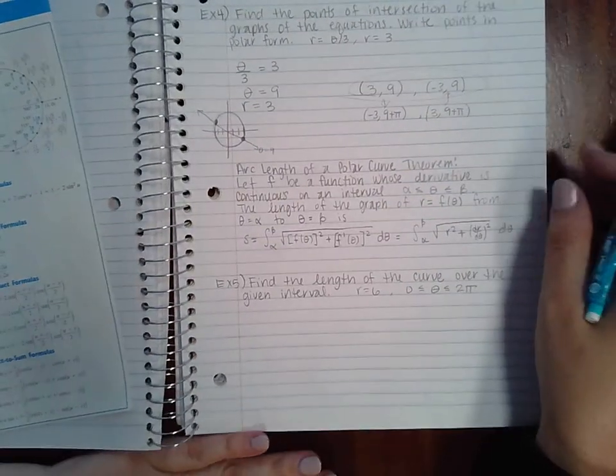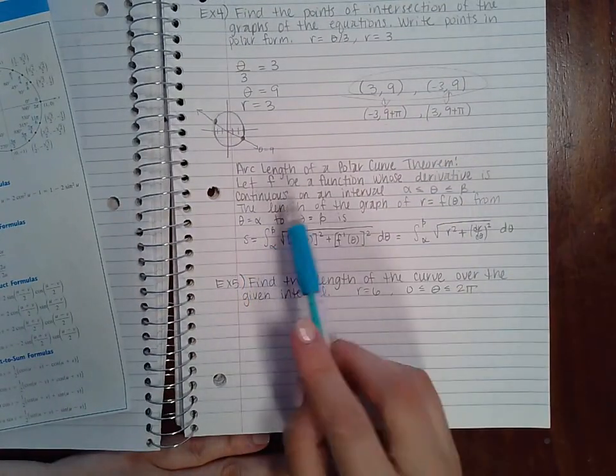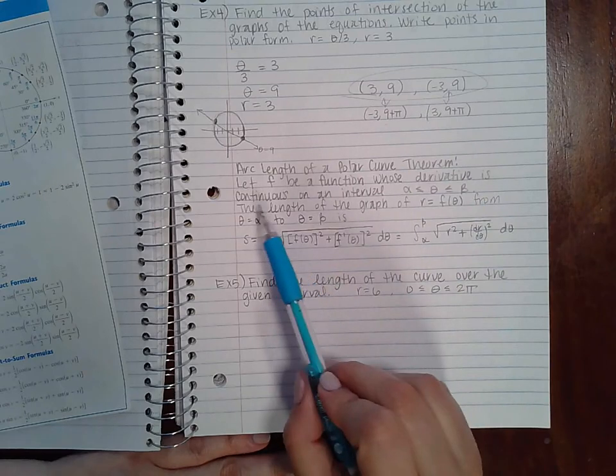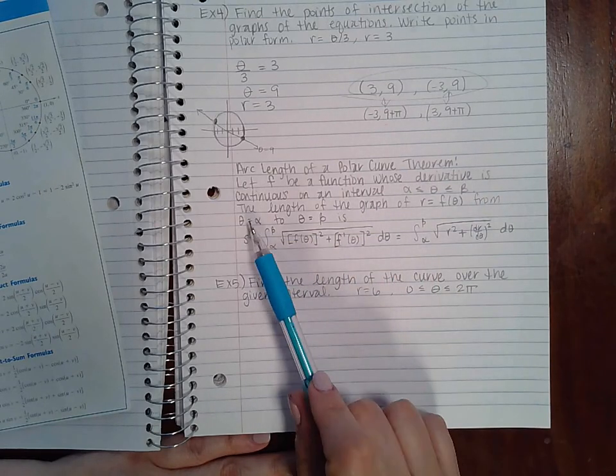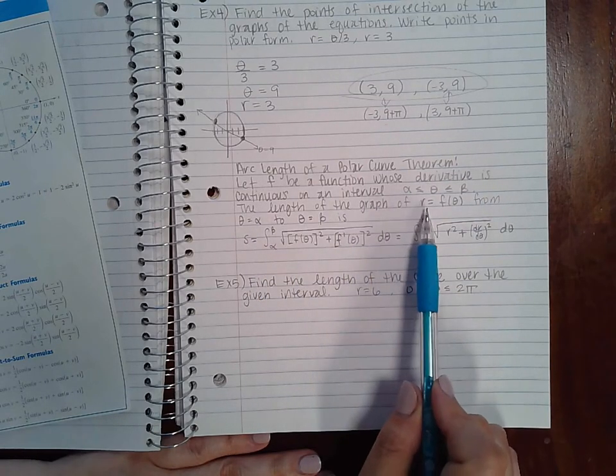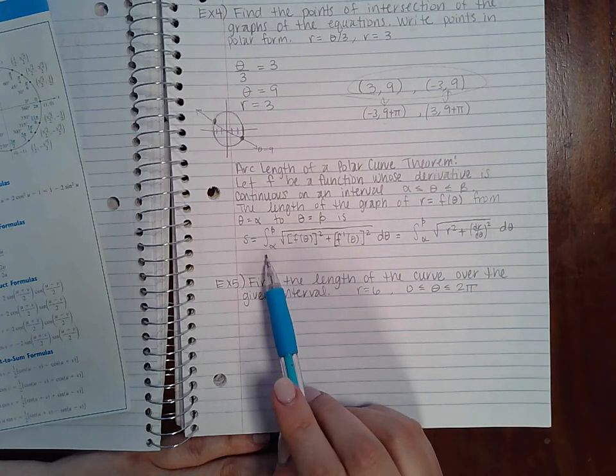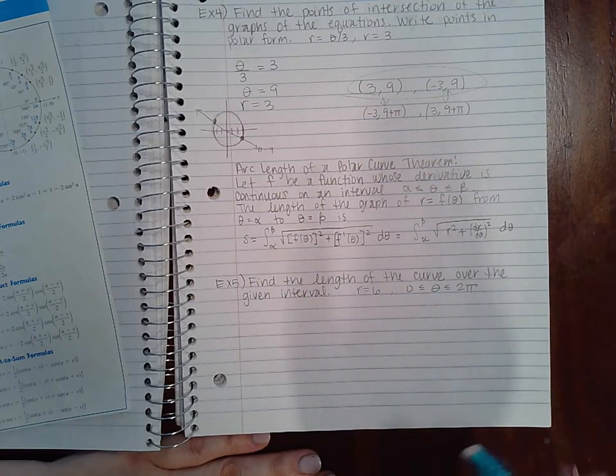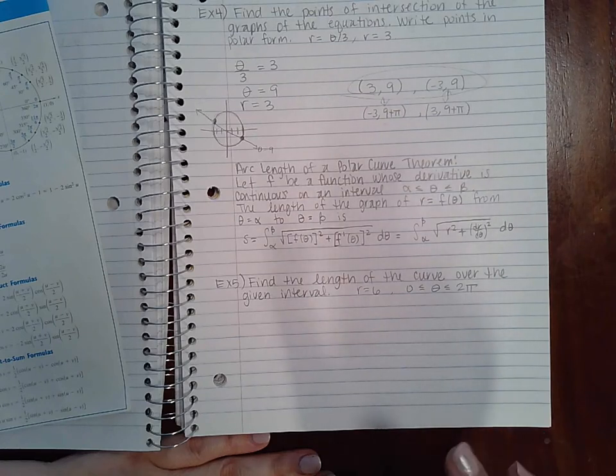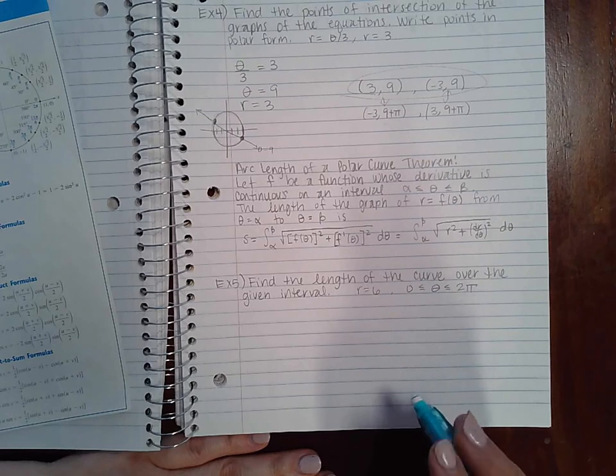Now for arc length of a polar form, here's the theorem. It says F is continuous function whose derivatives are continuous. The length of the graph of R from theta equal to alpha, theta equal to beta is this formula here. So this is how to find the arc length in polar curve form.